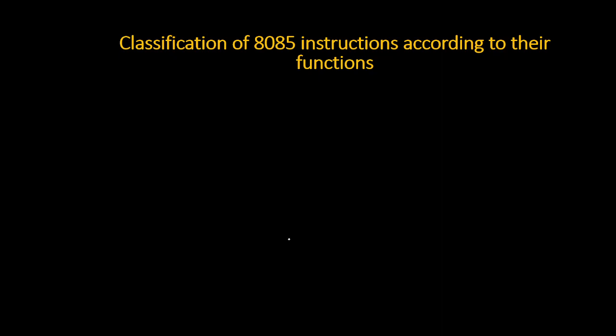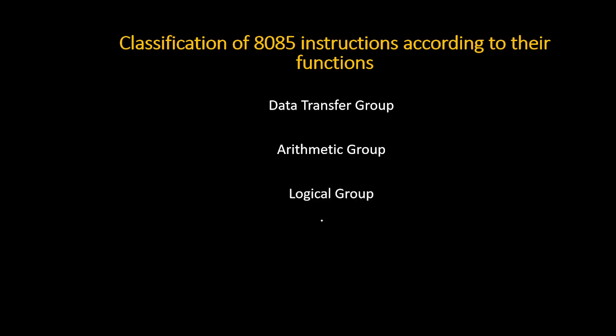Hello friends, today we are going to learn classification of 8085 instructions according to their functions. According to their functions, 8085 instructions are classified into the following categories: first is the data transfer group, second is the arithmetic group, third is the logical group, fourth is the branching group, and the last group is the machine control group.